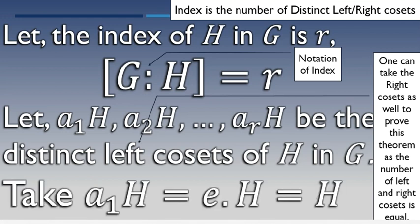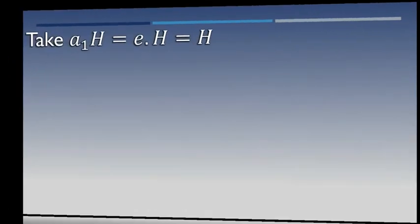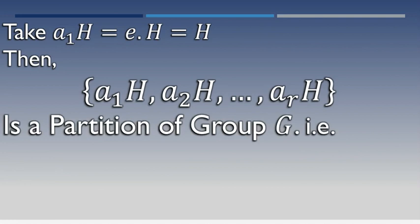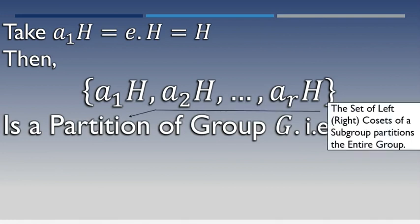Take a1H equal to eH, which equals H itself. So we consider the first left coset a1H is equal to H. This shows H itself is a left coset. Now consider all the left cosets of index r: a1H, a2H, etc., arH, which form a partition of the main group G.